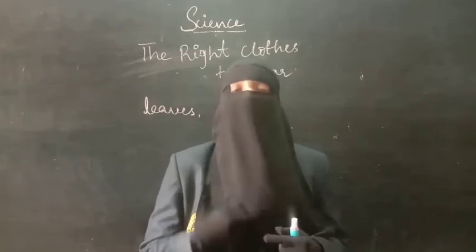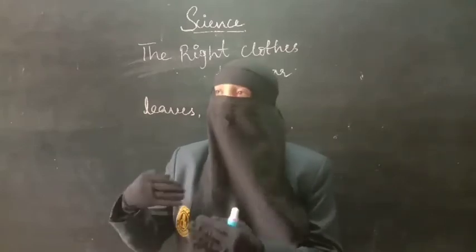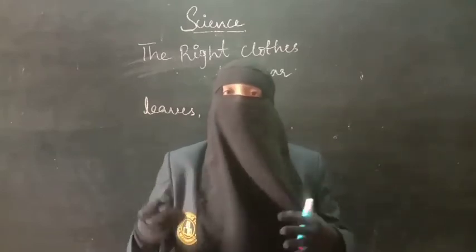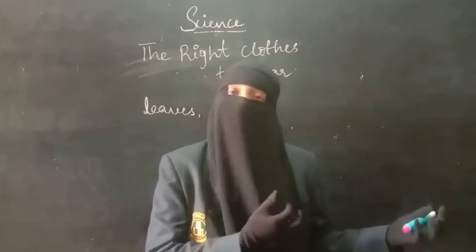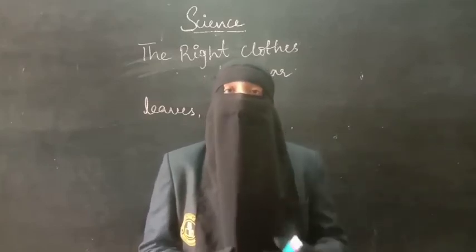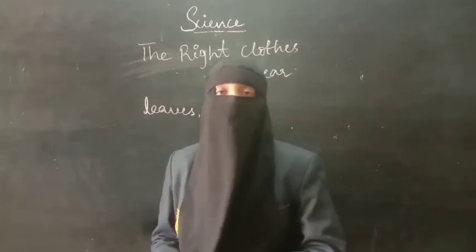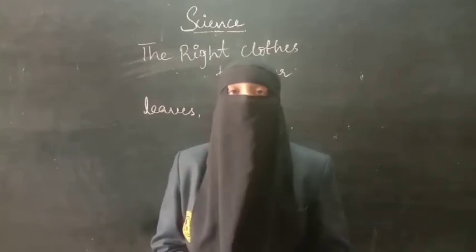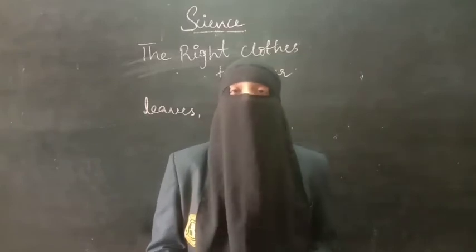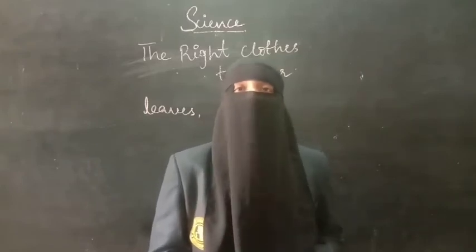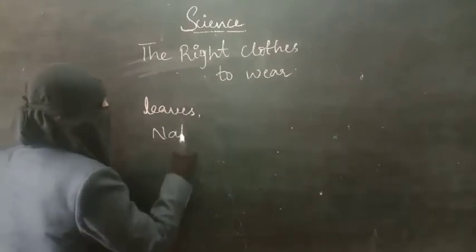As we know, we have improved ourselves. From early man, we are now able to explore each and everything present in the universe. Later on, they discovered the materials used for making clothes. There are two types of materials used for making clothes — two types of fibers: natural fibers and artificial fibers.